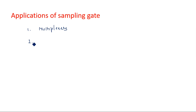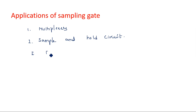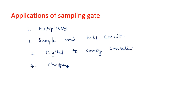Sampling gates are commonly used in multiplexers, sample and hold circuits, digital to analog converters, and chopper stabilized amplifiers. A chopper cuts the input signal into very small intervals.